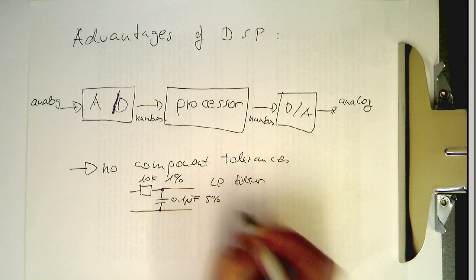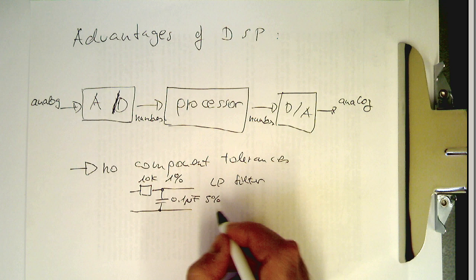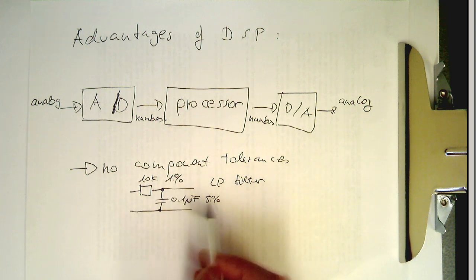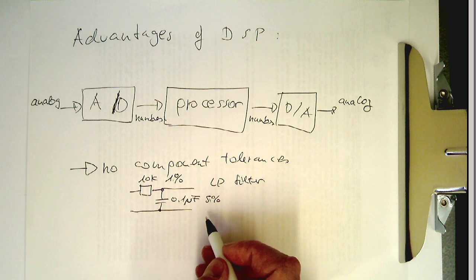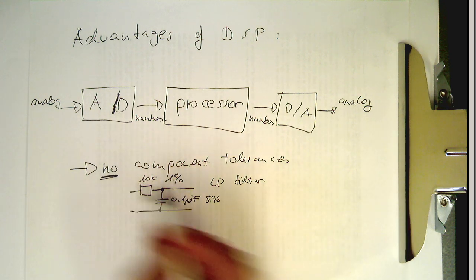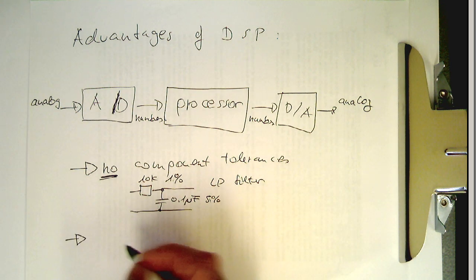Therefore we never know exactly what the cutoff frequency is precisely because we've got these two tolerances. Whereas in digital signal processing we have no tolerance, so the cutoff frequency will always be the same. That's obviously a real advantage. The other thing is it's much cheaper.